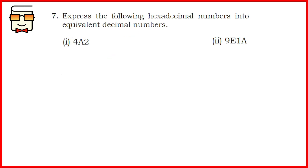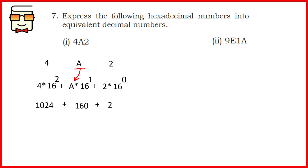Coming to question 7: convert hexadecimal numbers to decimal numbers. Multiply each digit by the correct power of 16. Be careful to represent alphabetical literals with their correct numeric values. For the first part, A is 10, so A times 16 to the power 1 gives 160. Solving all parts, the final answer is 1186 in decimal.